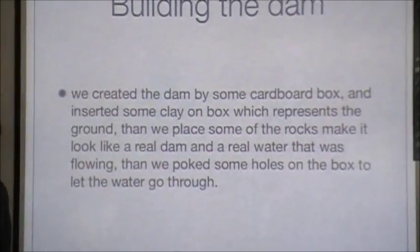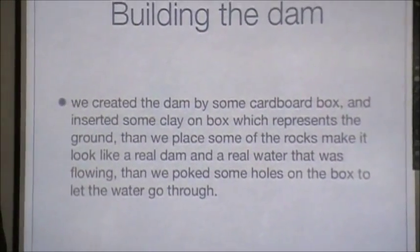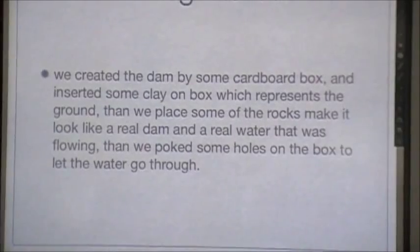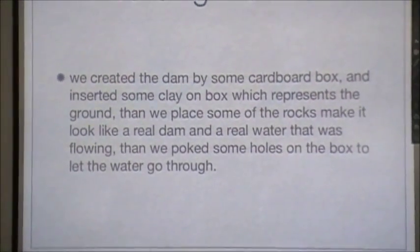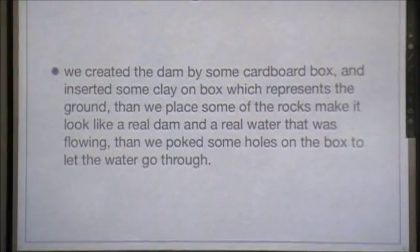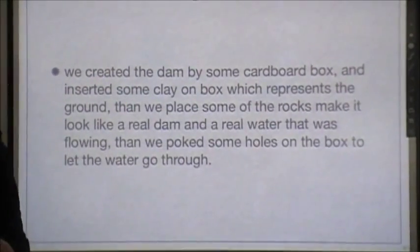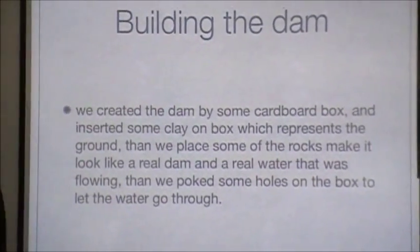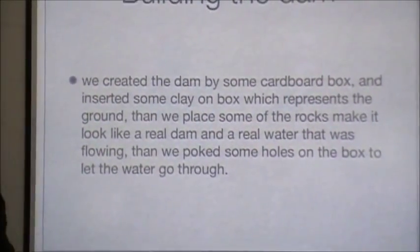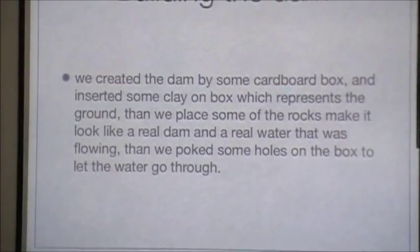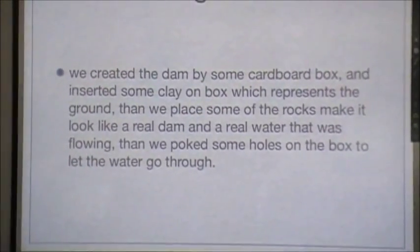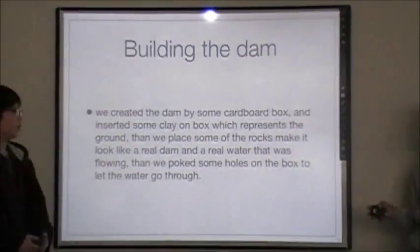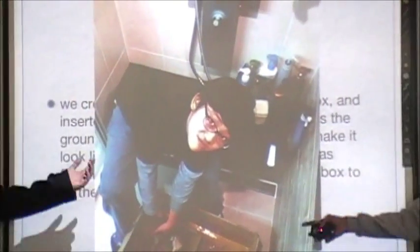So we built our project. We made the project to build a dam, and we created the dam. We used a cardboard box, and inserted clay on the bottom, which represents the ground. Then we placed rocks on top, so it looks like the real thing, and the water was flowing. On the side of the box, we poked square holes to make the water go through, because a dam basically makes the water go through. Then it's a big wall — you can see it.